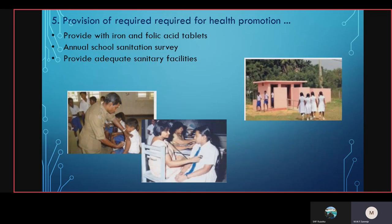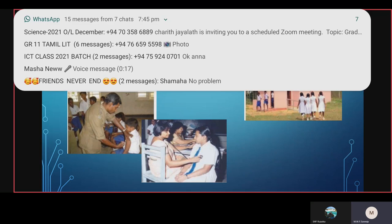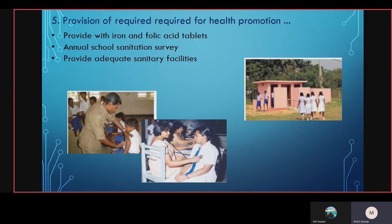The fifth strategy is provision of required services for health promotion. Students should be provided with iron and folic acid tablets. An annual school sanitation survey should be conducted and adequate sanitary facilities should be provided. A public health inspector carries out an annual school sanitary survey through which areas that could give rise to illnesses or accidents are identified and measures are taken to prevent them.